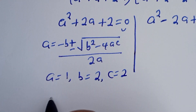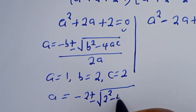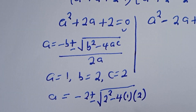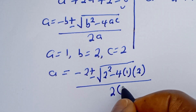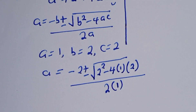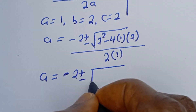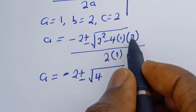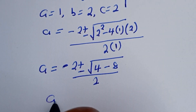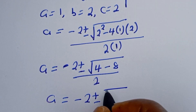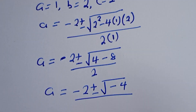Let's substitute into the quadratic formula for the first case. We have a is equal to minus 2, plus or minus square root of 2 squared minus 4 times 1 times 2, divided by 2 times 1. This gives a is equal to minus 2, plus or minus square root of 4 minus 8, over 2.